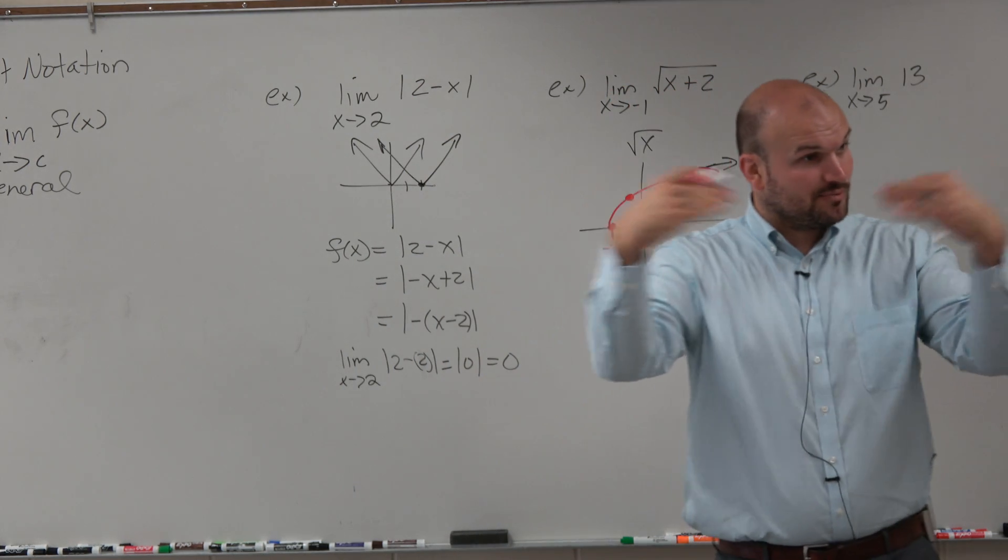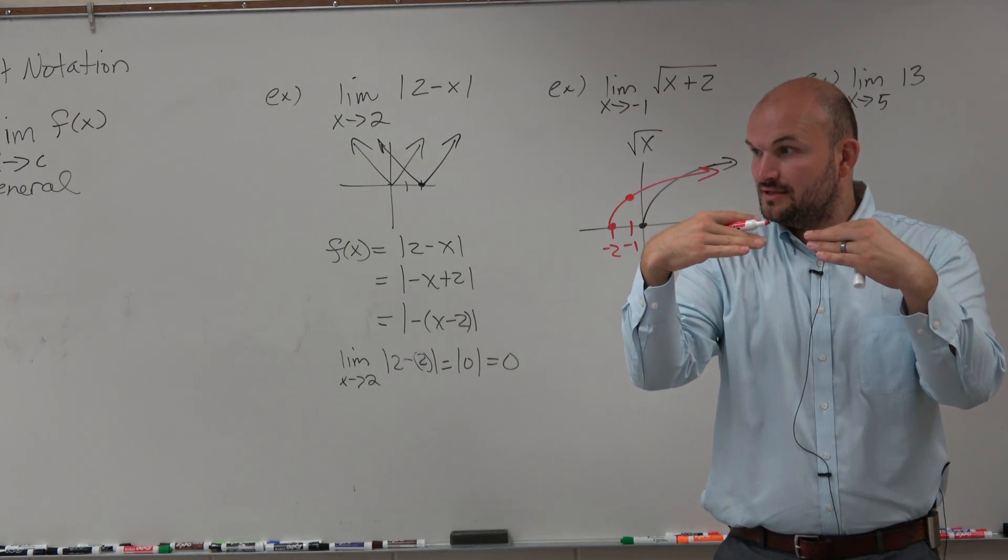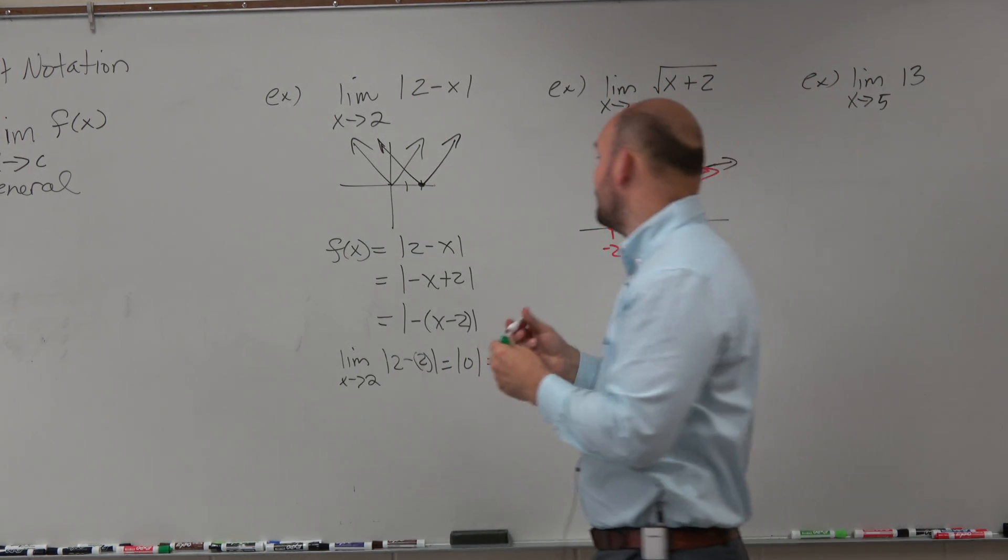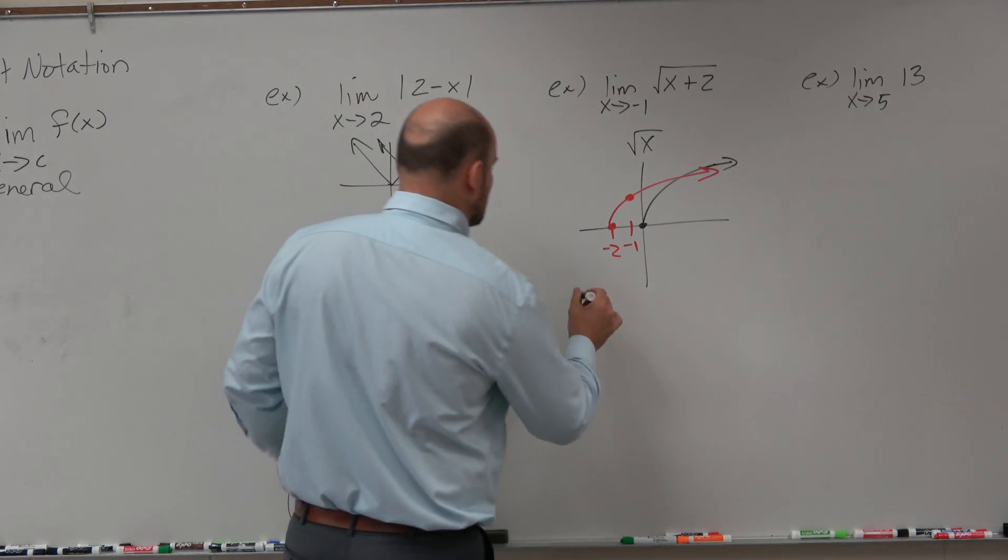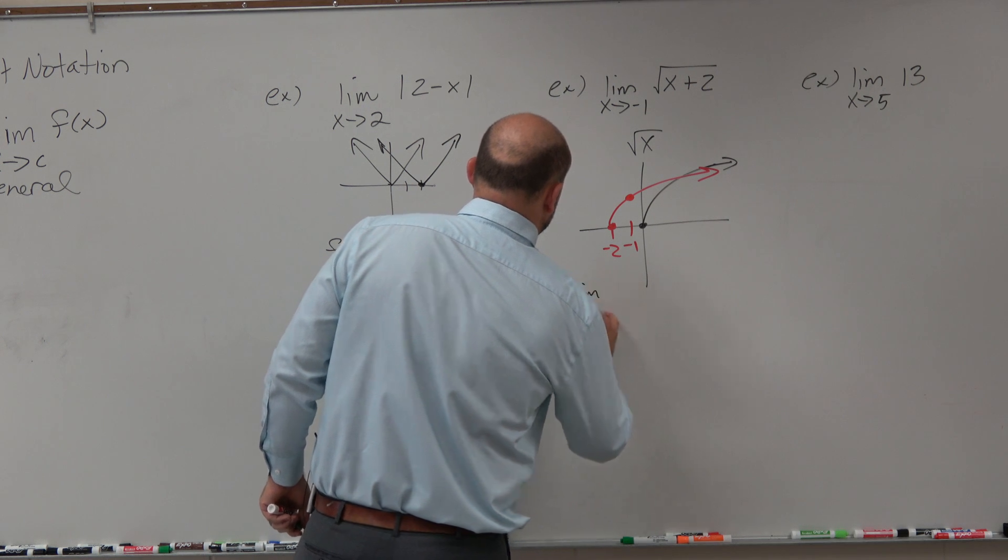We know it's going to have a limit because it's approaching it from the left and right. It's approaching from left and right, and so we know it's going to have a limit. So we just need to figure out that value. Well, fortunately for us, since this is continuous, we can just plug that in.